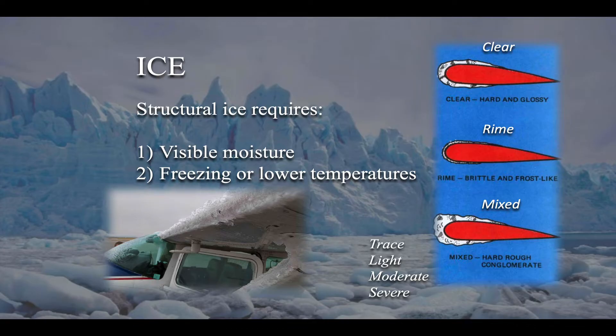Secondly, the temperature has to be freezing, zero degrees Celsius or lower. In other words, as an instrument pilot, if you're flying in IMC conditions, you're in the clouds, and you know the temperature is freezing or below, you need to be on the watch for icing, for structural icing. So temperature is something you need to be acutely aware of when you're in IMC.